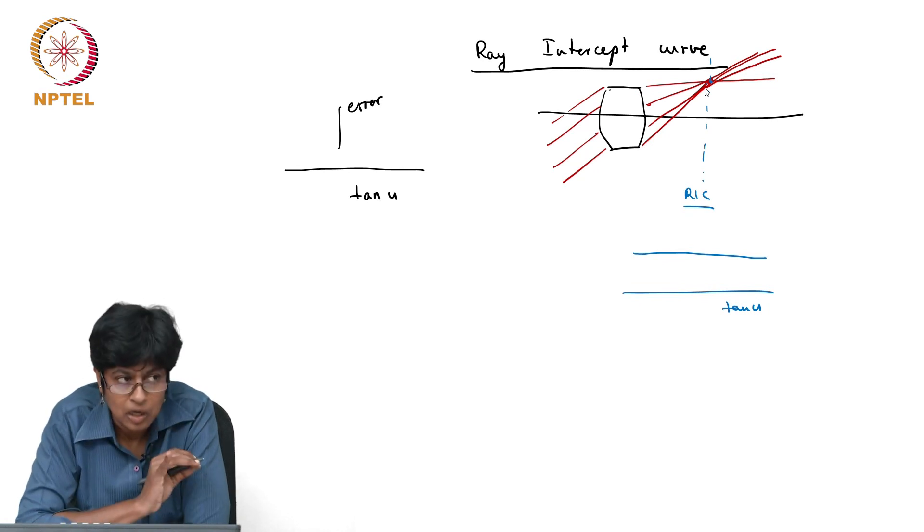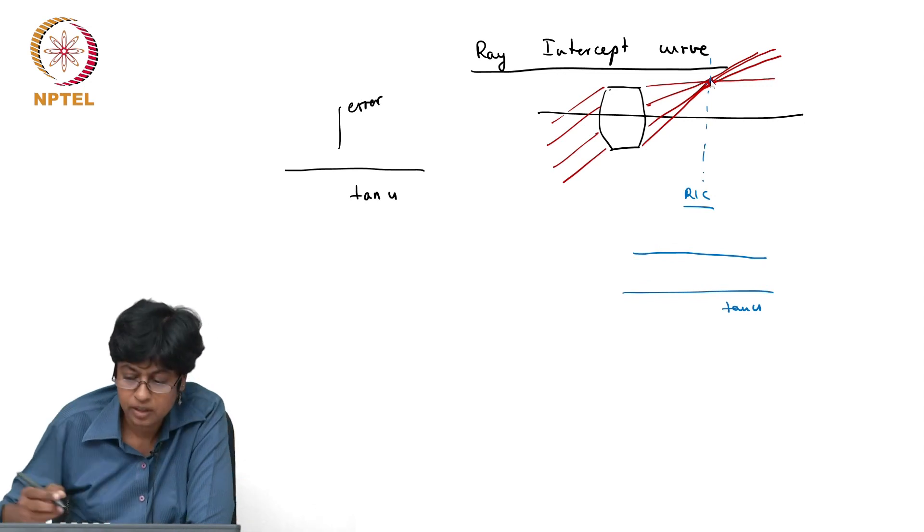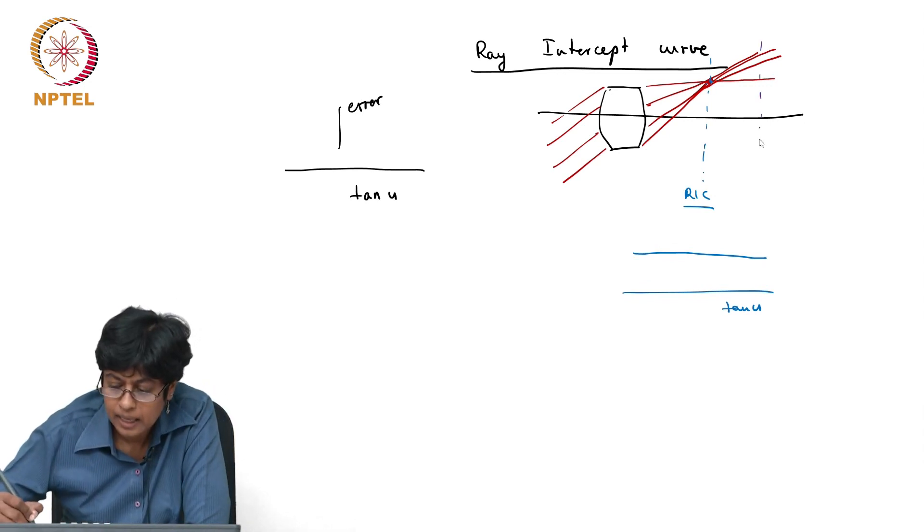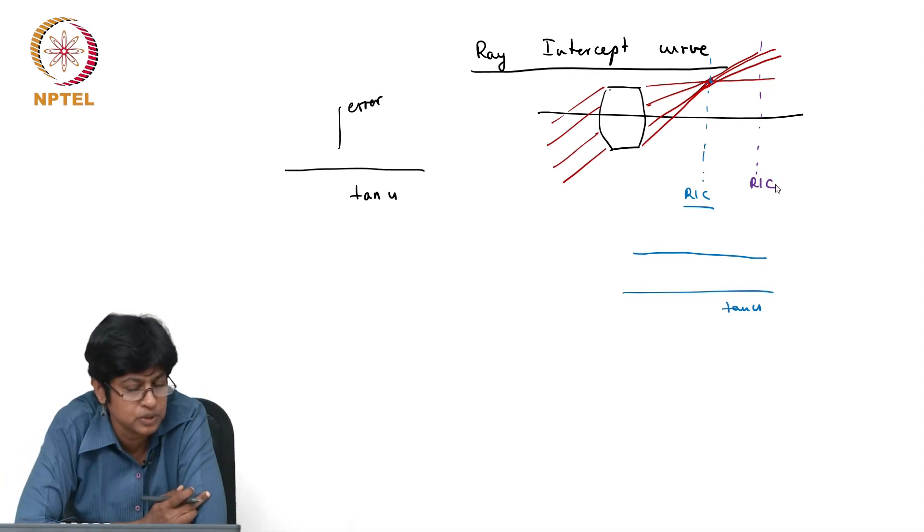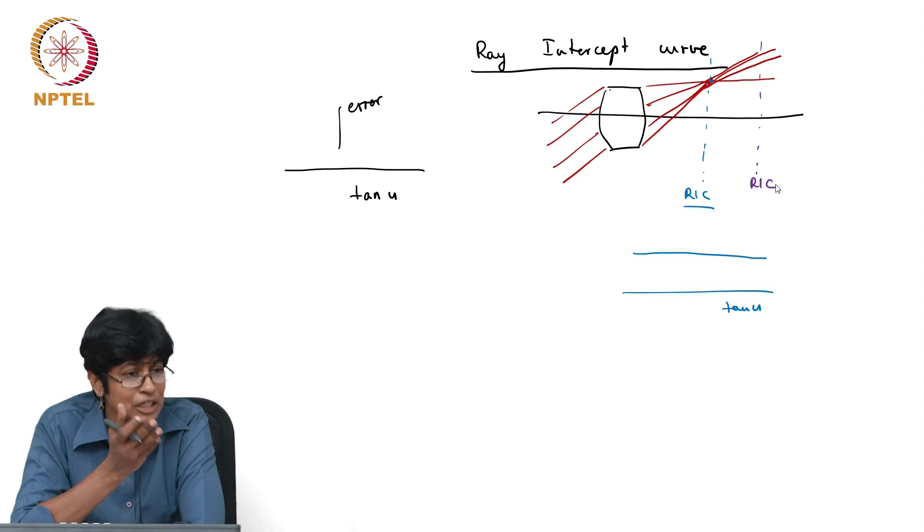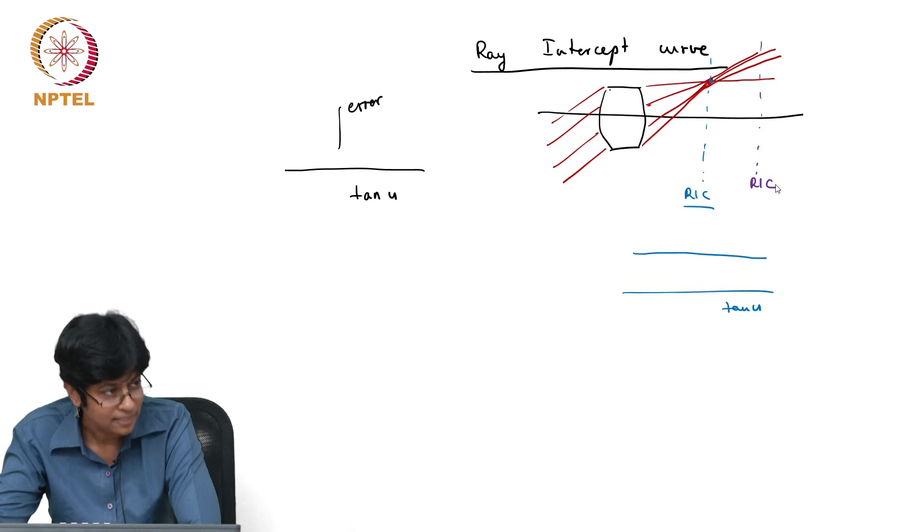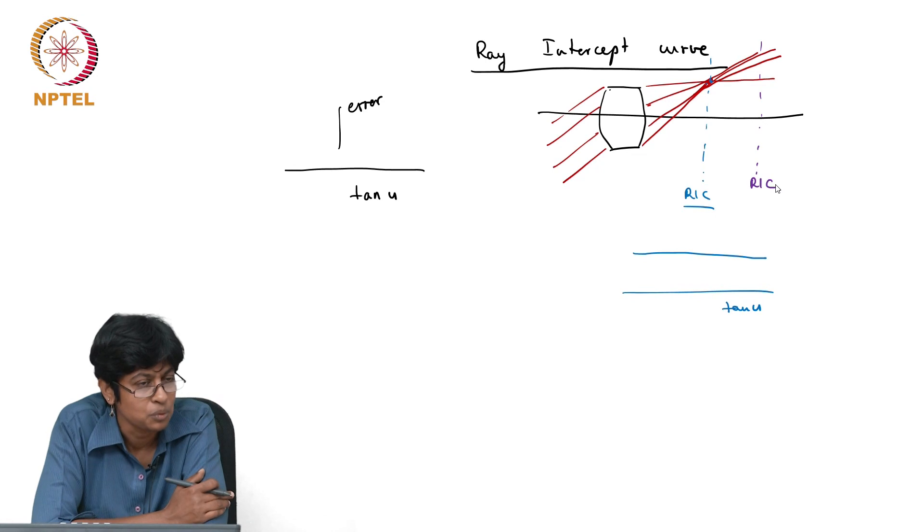Now I don't change anything in my optical system, but I move the plane that I am looking at. Instead of looking at the plane where all these rays are focused, I move my plane to this position. What will change now? Take the tan u and for a particular, and how do we, again you don't even have to guess which ray to start with. You start always with the topmost ray.